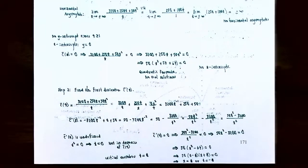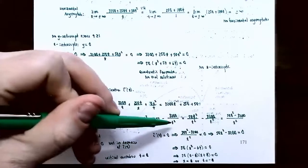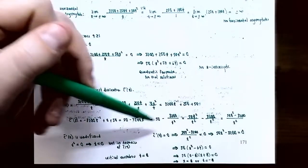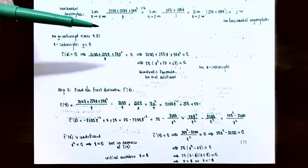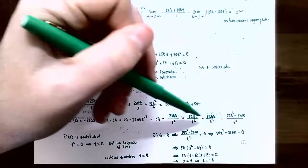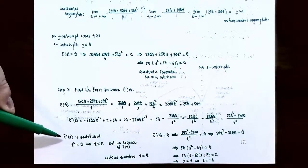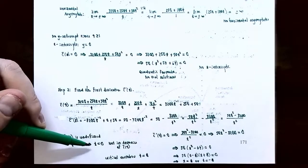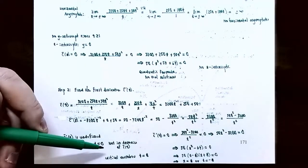Now let's find where the derivative is undefined or equal to zero. C̄'(t) is undefined when t² = 0, i.e., t = 0, which is not in the domain, so there is no critical number there. Setting the numerator equal to zero: 50t² − 3200 = 0. Factor out 50: 50(t² − 64) = 0, so t² − 64 = 0. This is a difference of two squares, factoring as 50(t − 8)(t + 8) = 0, giving t = 8 and t = −8.